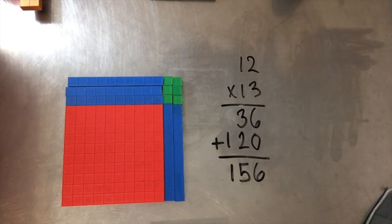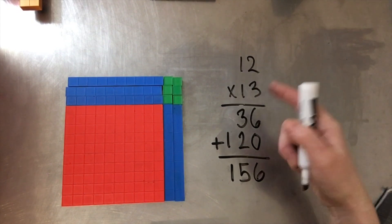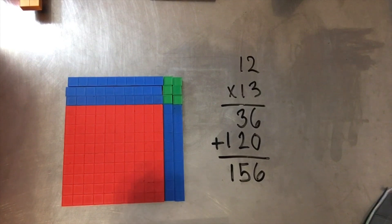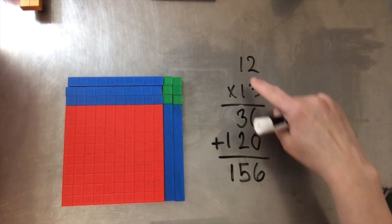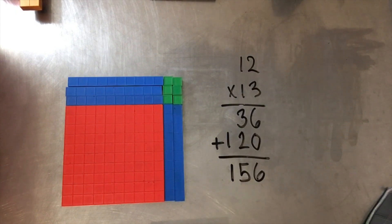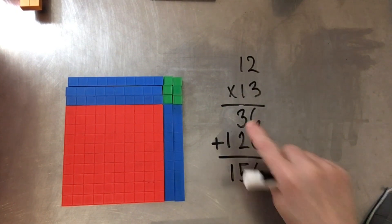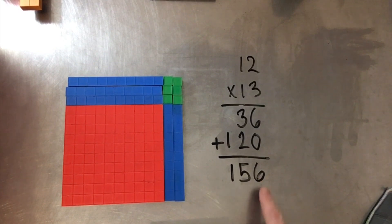Only '2 times 3 is 6' really makes sense in the standard algorithm — everything else ignores place value. That's the beauty of teaching multiplication this way: kids learn place value and understand that the '1' in 12 is really a ten, and the '1' in 13 is really a ten. They understand that three tens plus two tens equals five tens, plus one hundred equals 150, plus six units — and they grasp the difference between each of these place values.